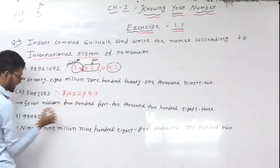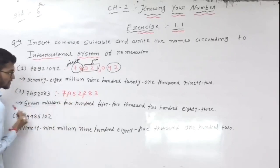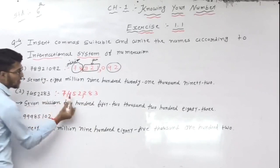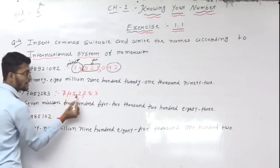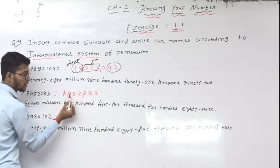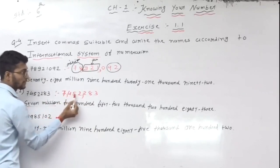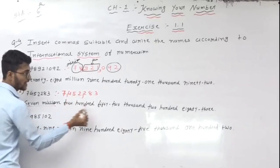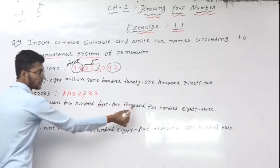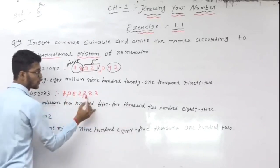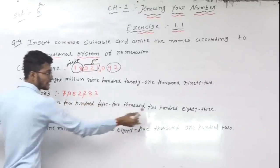Next number in international system: 97452283. Ninety-seven million, four hundred fifty-two thousand, two hundred and eighty-three.